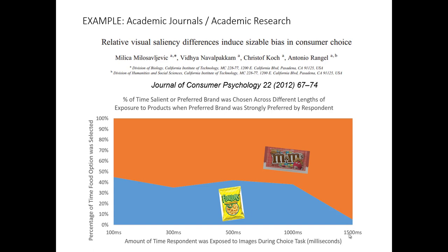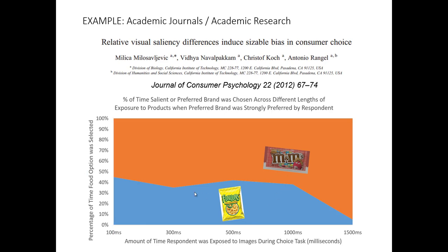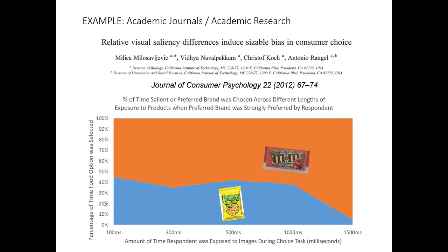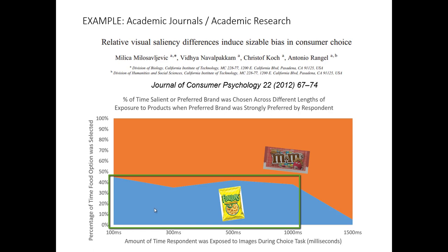On the y-axis, we see the percentage of which food product was chosen. The orange area represents the preferred product, and the blue represents the non-preferred but visually salient product. When given 1.5 seconds, nearly everybody selected their preferred product and very few chose the merely salient one. However, when individuals were given only a very short amount of time, a large proportion chose the visually salient product and not the product they actually preferred.